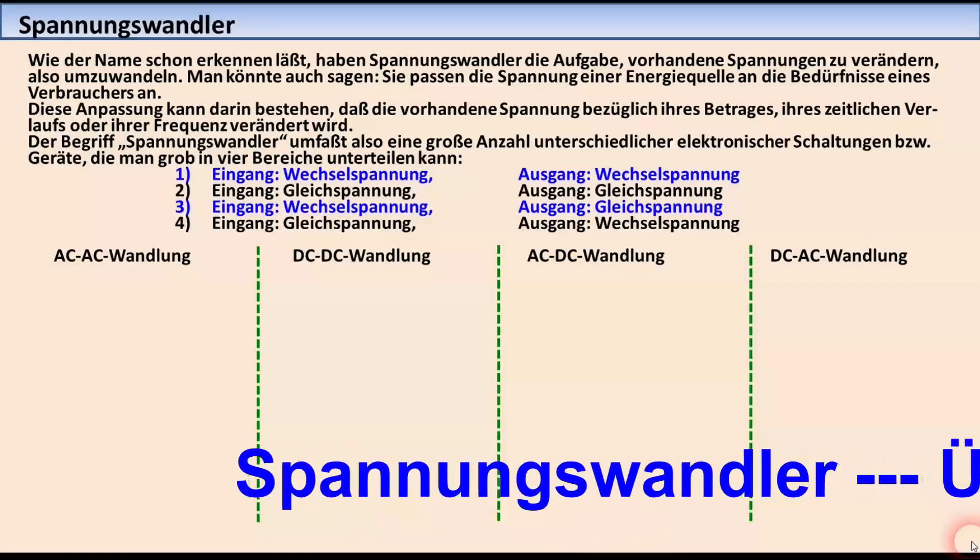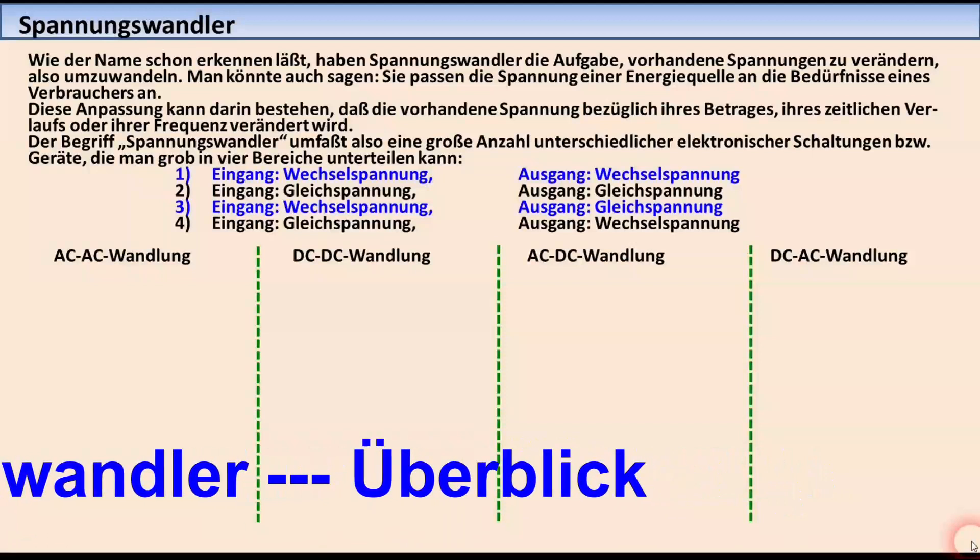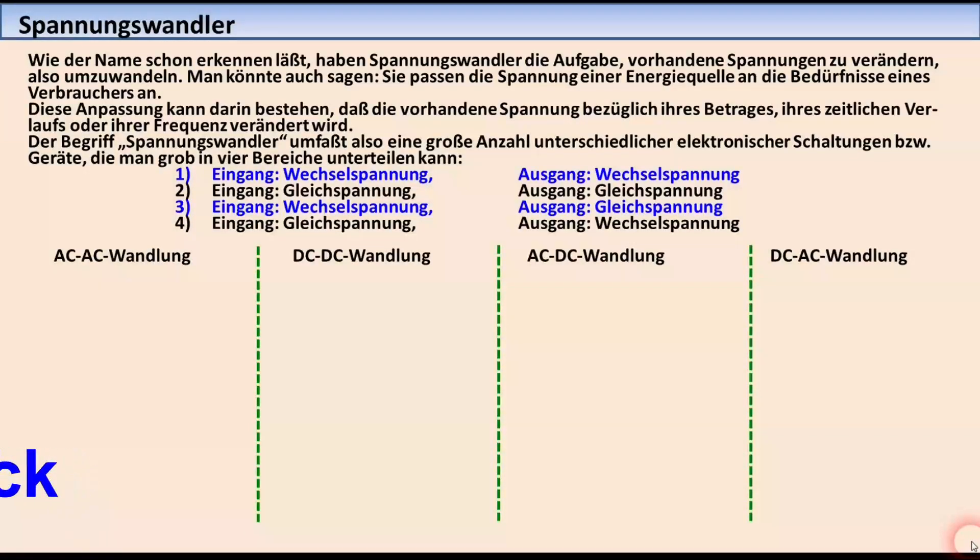Beim Begriff Spannungswandler denkt man zunächst einmal an Adaptergeräte, die es ermöglichen, 12 Volt Geräte an einer Bordspannung von 24 Volt zu betreiben, also im LKW oder im Bus, oder 230 Volt Geräte an einer Bordspannung von 12 Volt oder 24 Volt zu betreiben, im PKW, im LKW oder im Bus, oder 110 Volt Geräte, wie sie in Amerika zum Beispiel üblich sind, an 230 Volt zu betreiben.